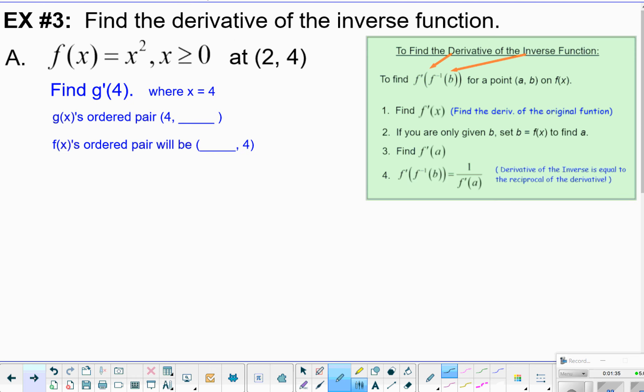Alright. I want to just go through an example. We'll start with a. Maybe you've already done this one and you could scroll ahead a bit. Alright. So one thing I'm going to do, I want to find g prime of 4, where x is equal to 4 then. g's ordered pair, well, here they told us the original function, that the original function has 2, 4. That makes the inverse function g's ordered pair, 4, 2.